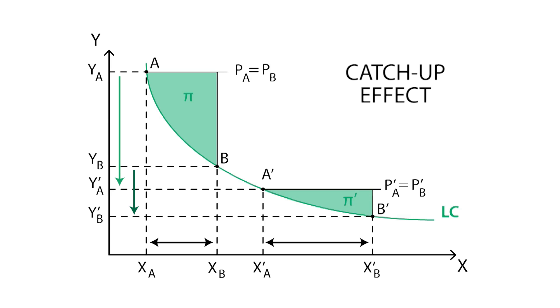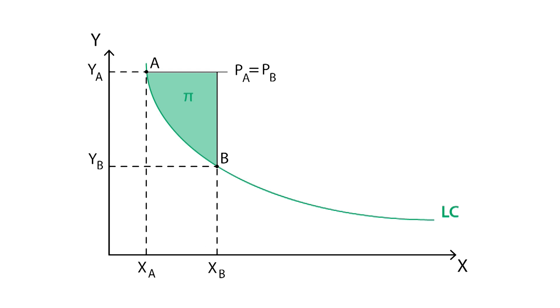However, since B is able to anticipate all these scenarios, firm B will try to banish firm A from the market. Firm B could decrease its initial price, which would force firm A to lower its price, thus increasing losses. Firm A will ultimately leave the market.